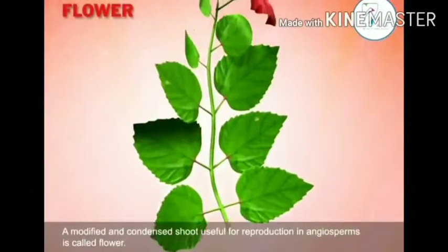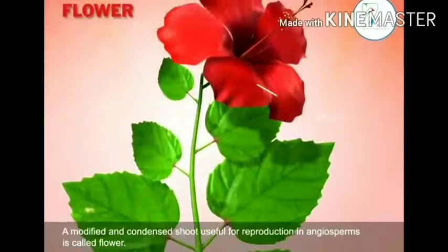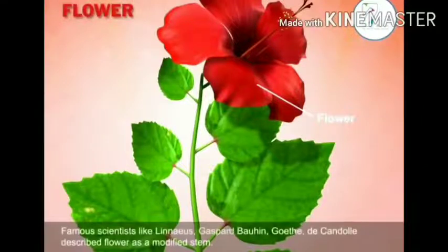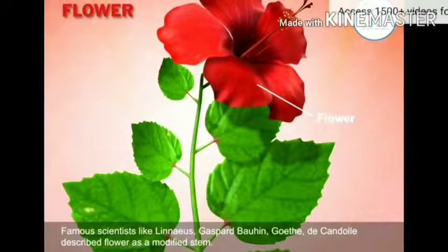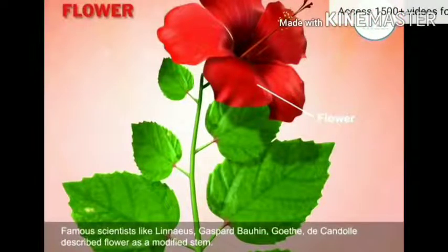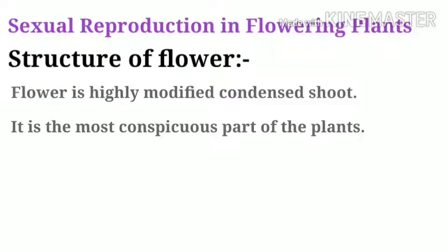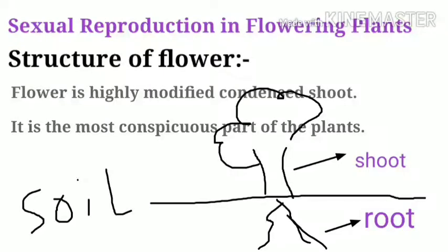A modified and condensed shoot used for reproduction in angiosperms is called a flower. Famous scientists in the lineage — Gaspard, Goethe, de Candolle — described the flower as a modified stem. So let's start with sexual reproduction in flowering plants. The flower is a highly modified, condensed shoot that has been transformed in structure.